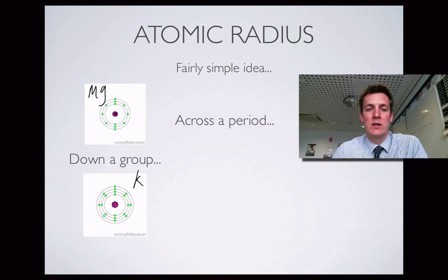If you're imagining the atom as a spherical object with a center and an outside, then the radius is quite simply the distance from the center to the outside. So the atomic radius is a measure of the size of an atom, or the distance from the center of the nucleus to the outside of the outer shell.